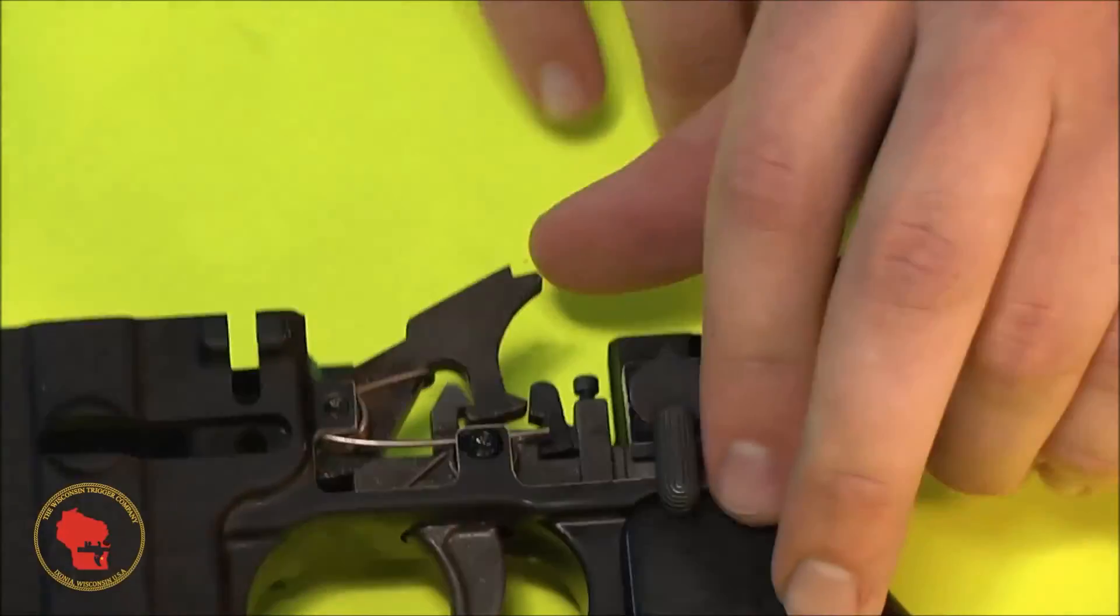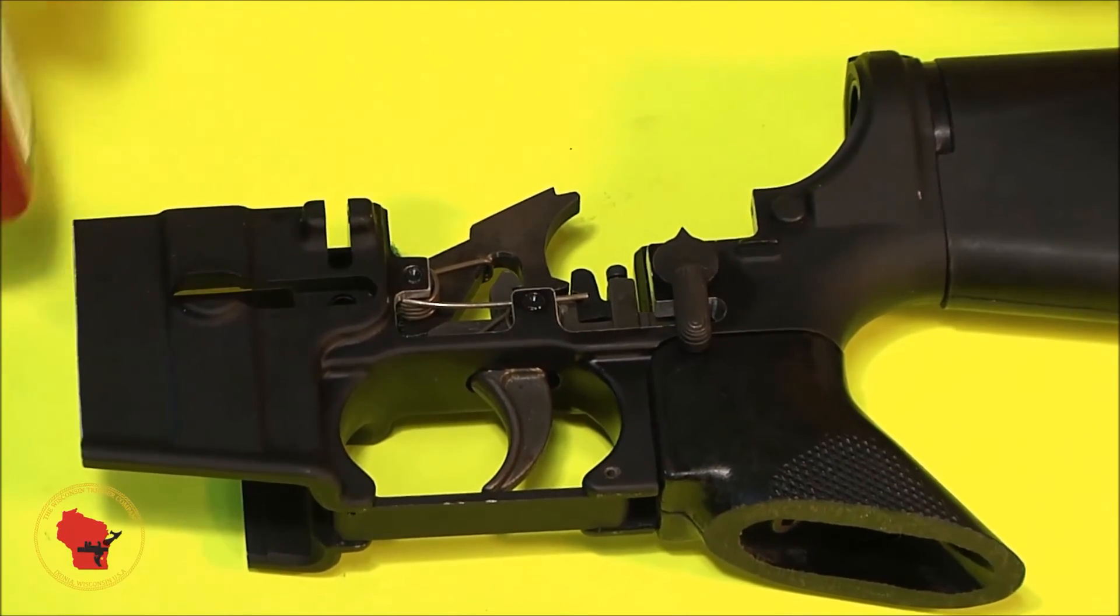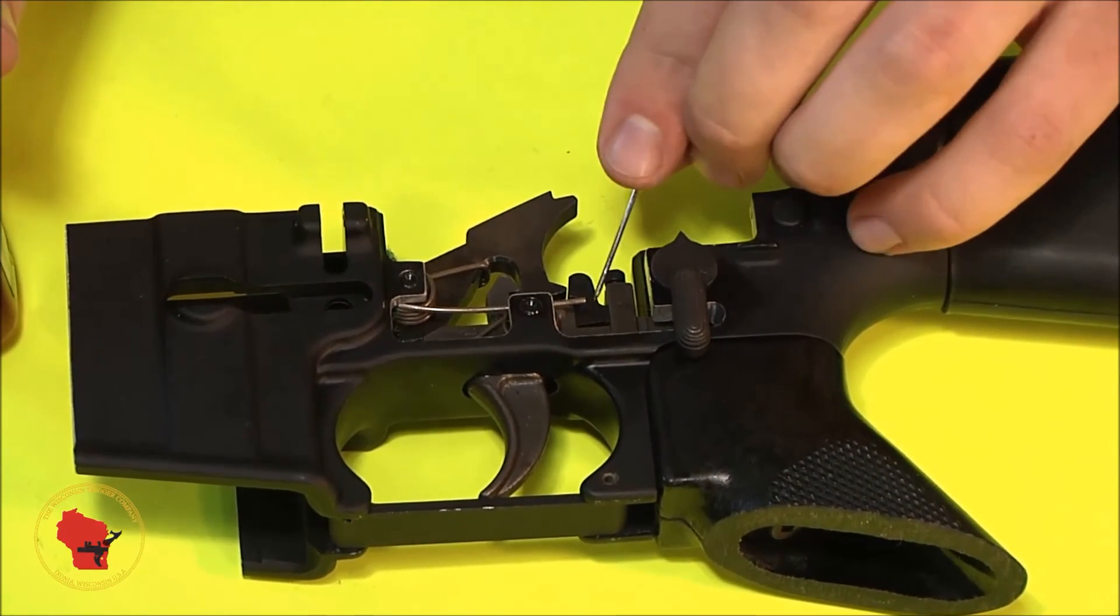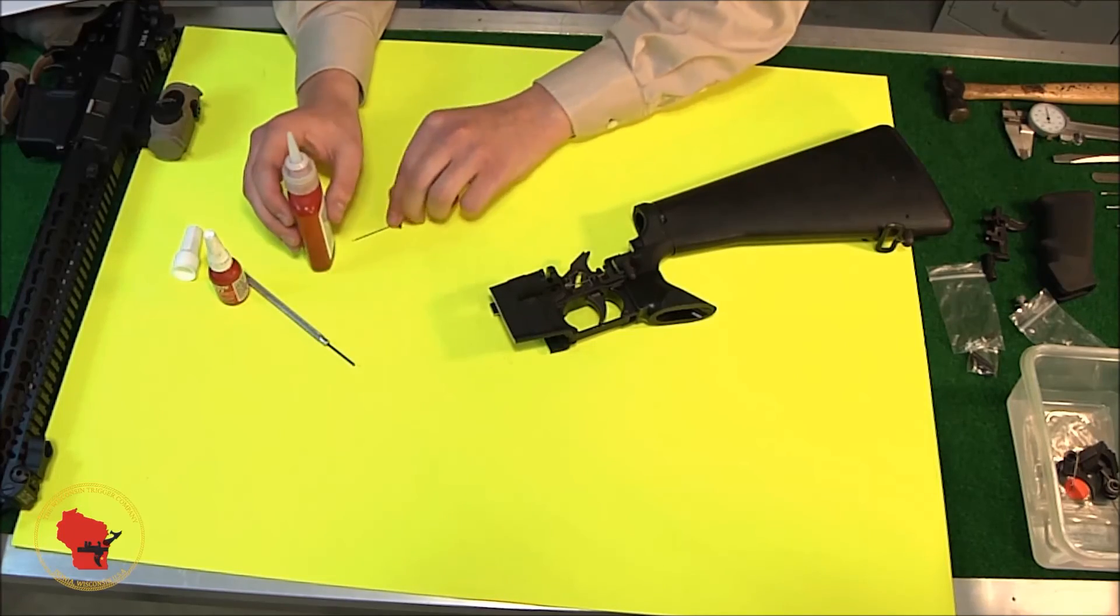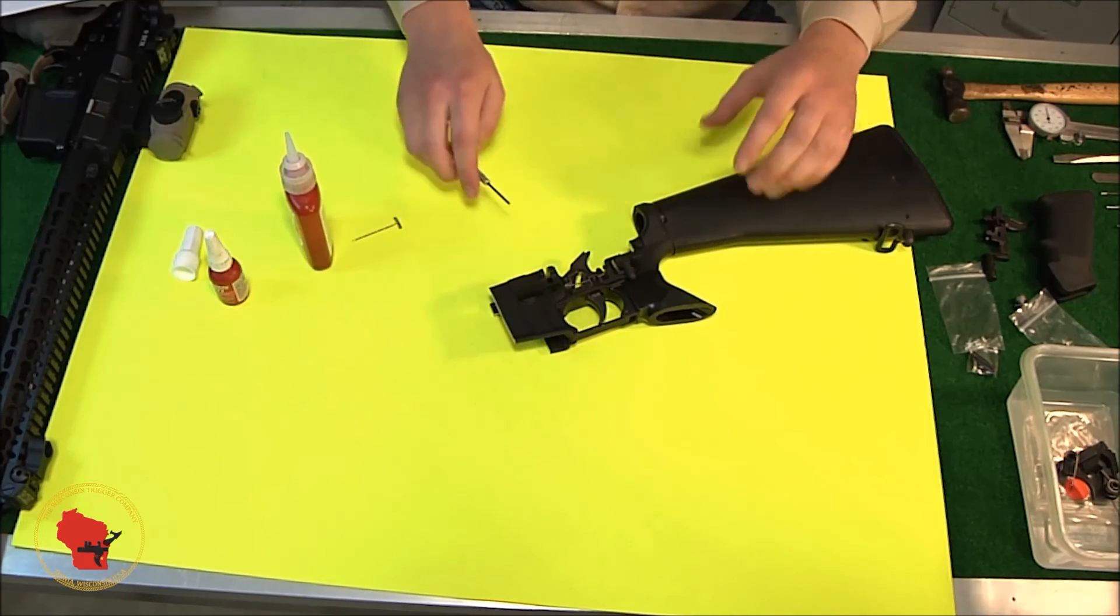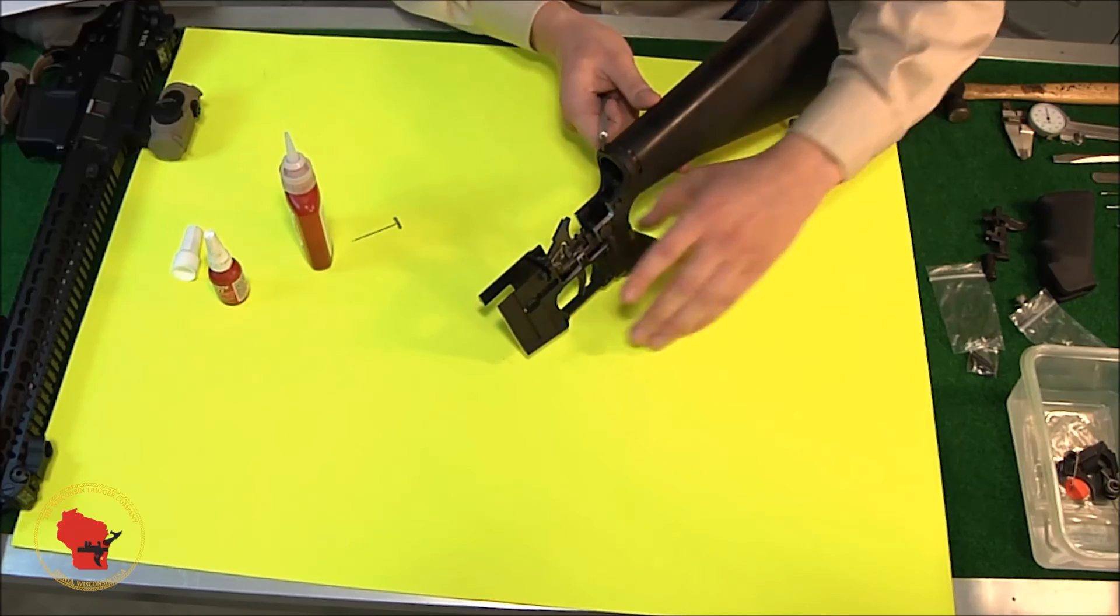And that'll give you enough engagement with the Loctite to get it all the way in there without going too far and gooping up the bottom of the disconnector. I'm not going to actually put Loctite on here because like I said, this is our demonstration model.